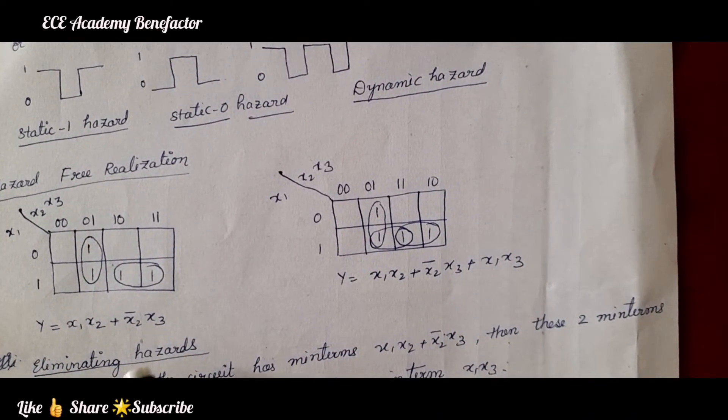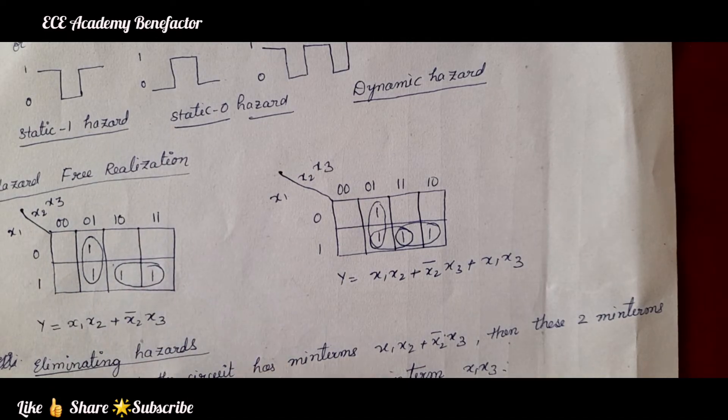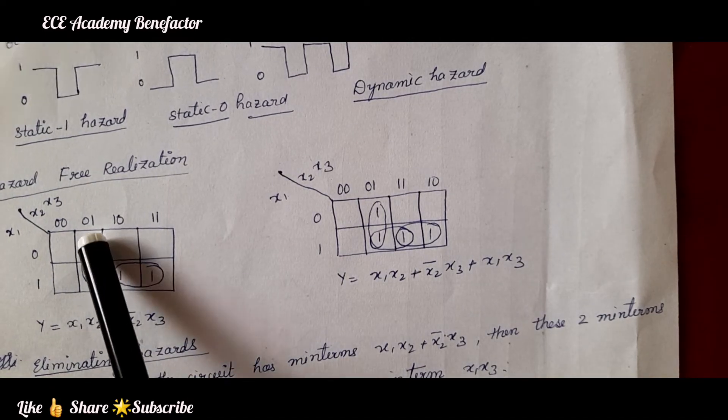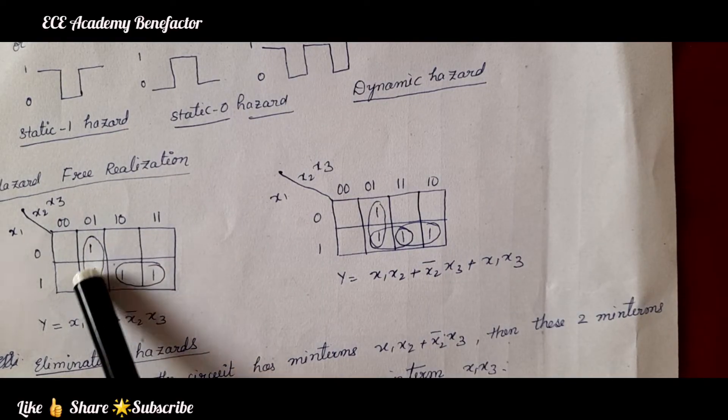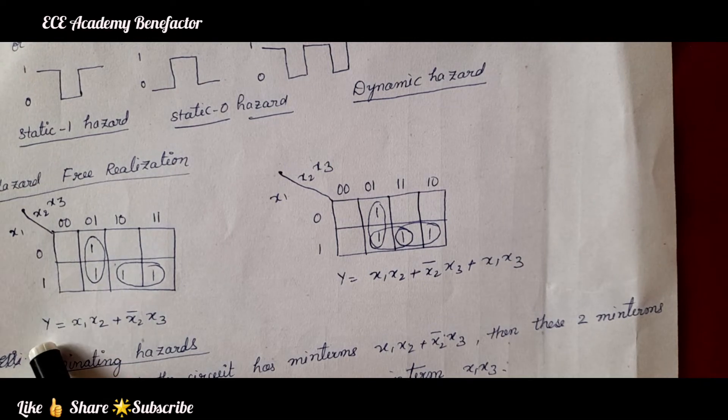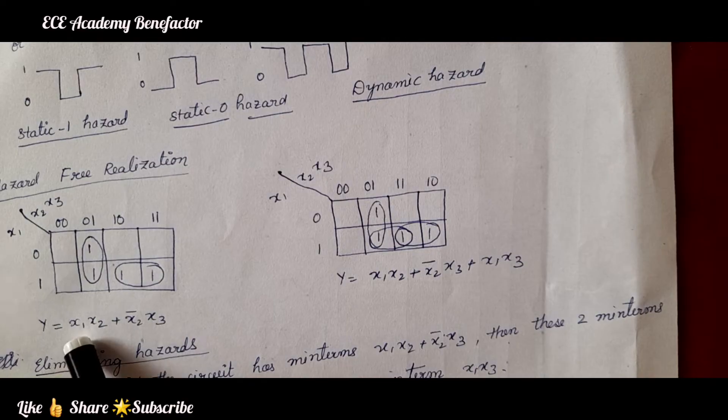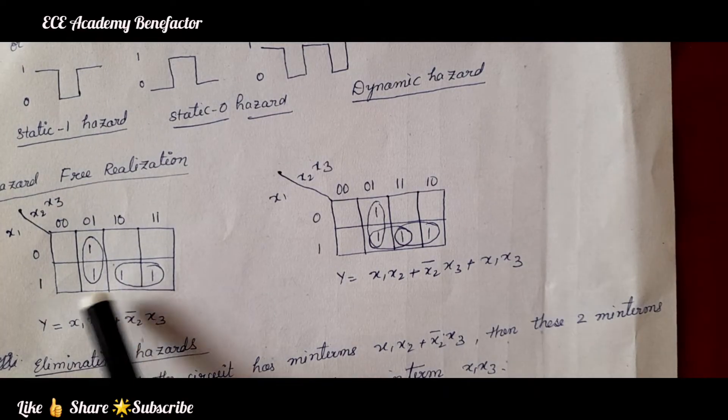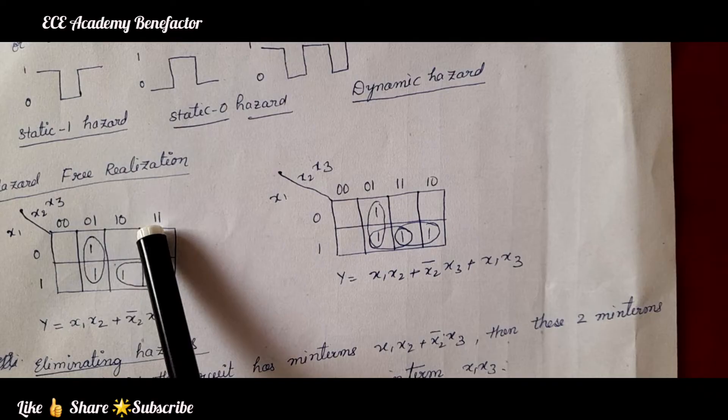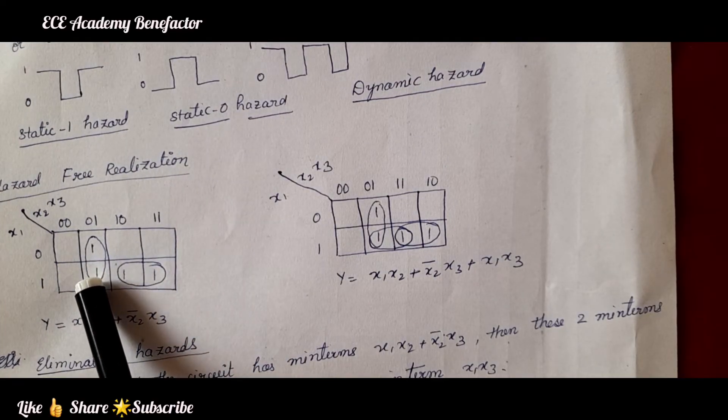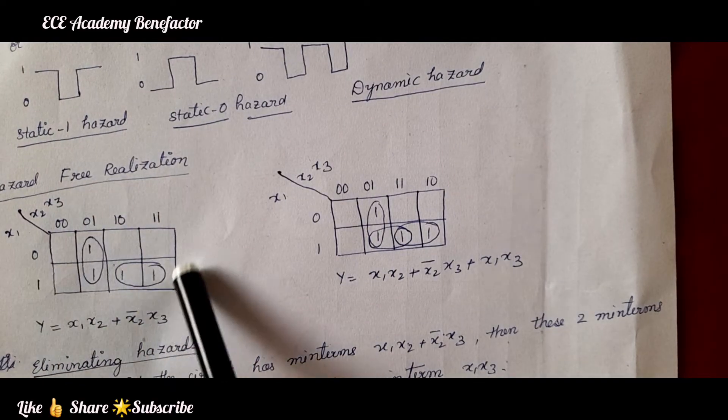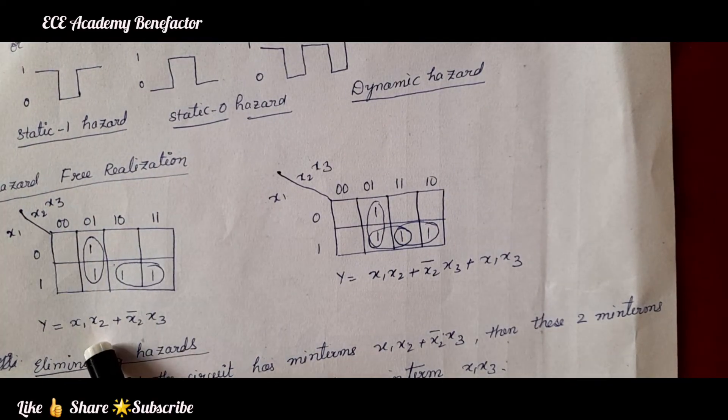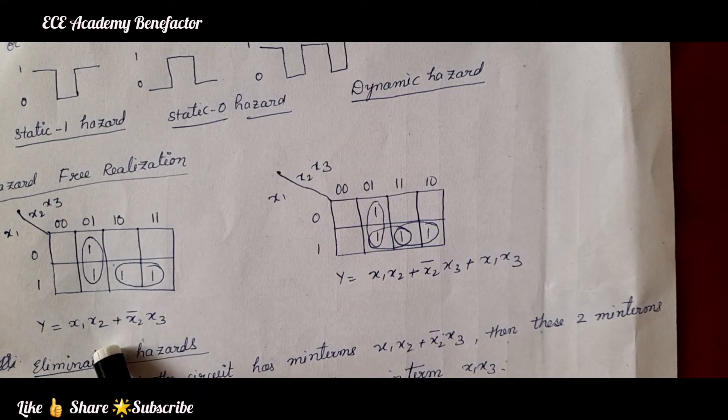Let us see how can we make the hazard free realization. Let us assume that this is a K map for a given circuit. And when we do grouping, we do group this way. By grouping we are getting the output or the Boolean expression to be y equals x1 x2 for this term x1 x2. And for this one it is coming as x2 bar x3. So, for this particular K map we are getting this Boolean expression.